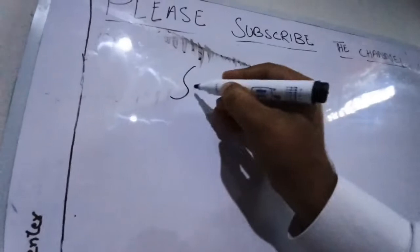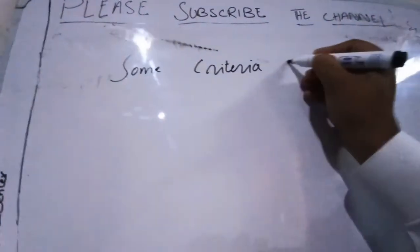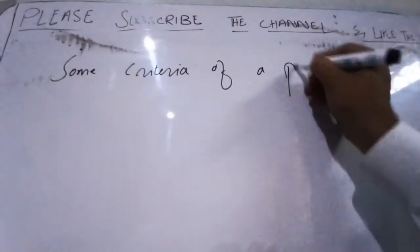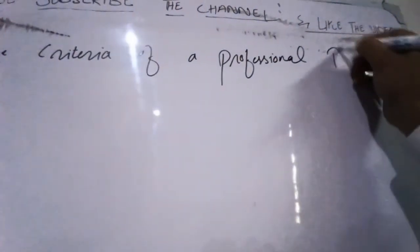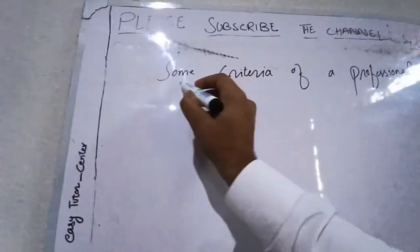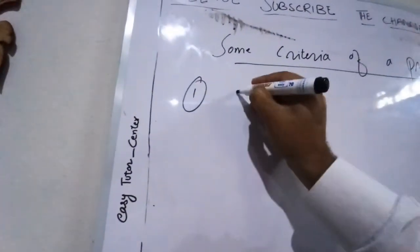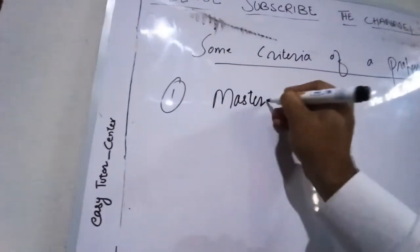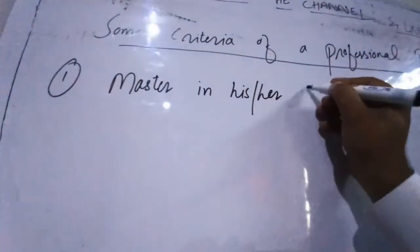So, dear students, today we will learn some criteria of a professional teacher. Number one: master in his subject.